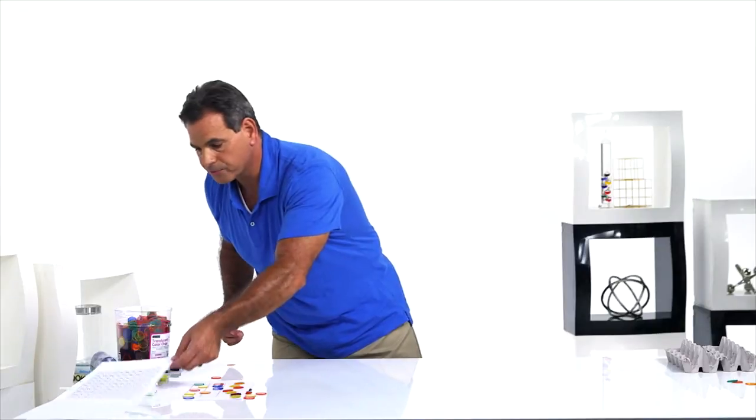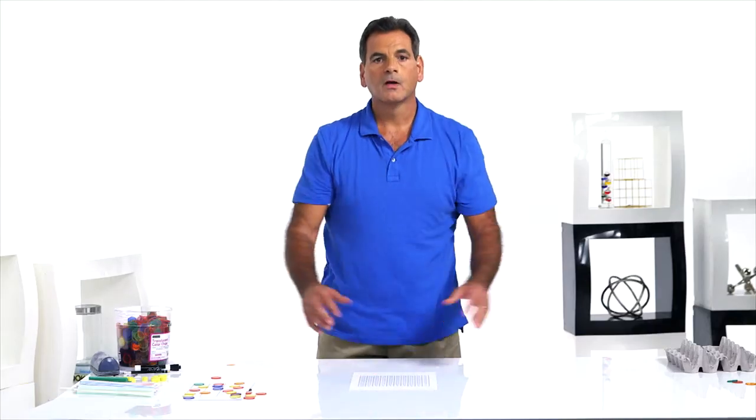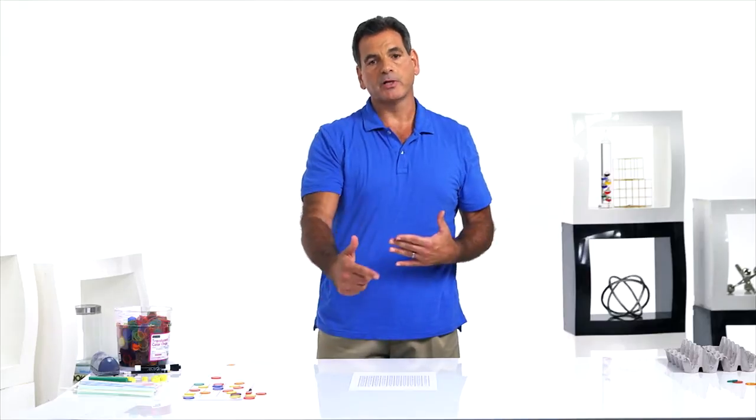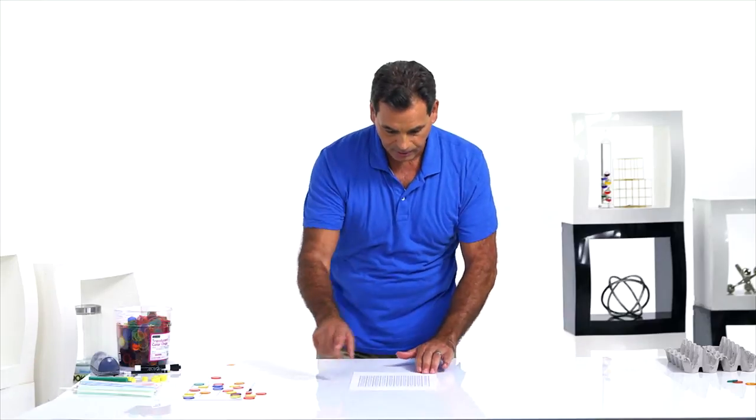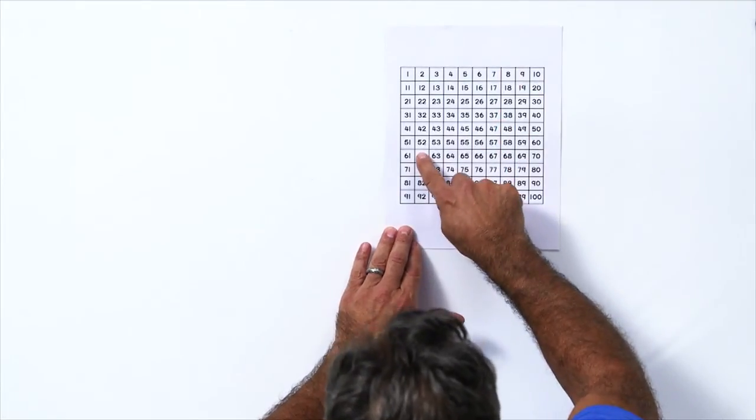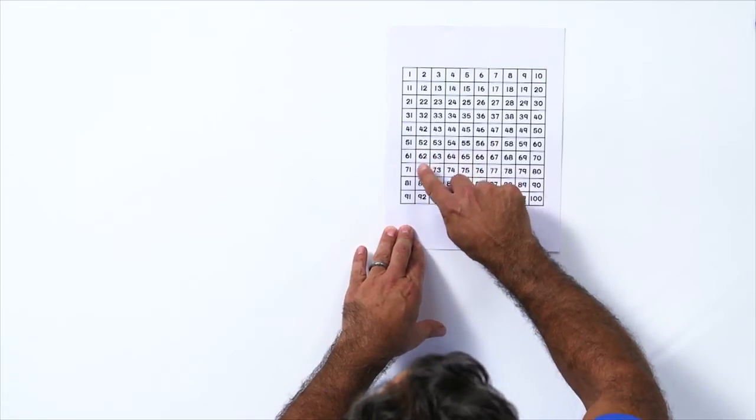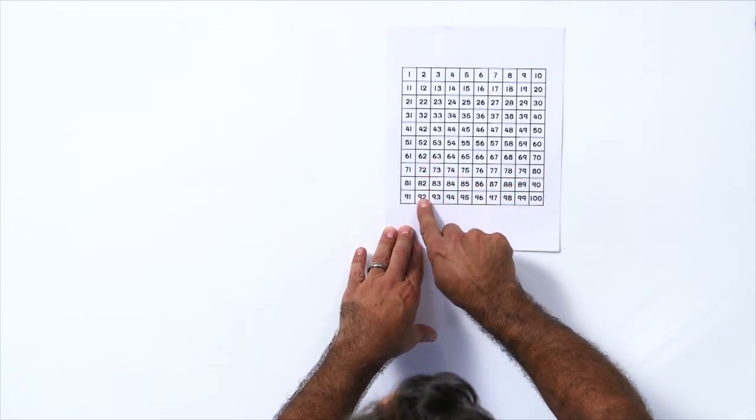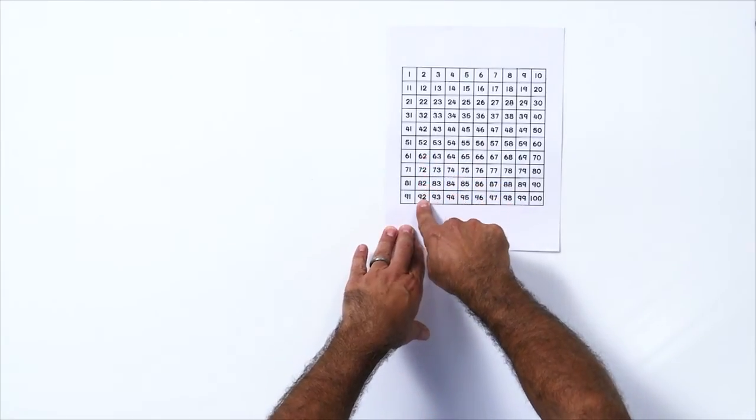We can also use the hundreds chart. 62 plus 30. Remember we learned to count by tens within the decades? So let's look at 62 plus 30. Where's 62? 62 plus 30. How many tens are in 30? 1, 2, 3. 92. 62 plus 10, 20, 30 is 92.